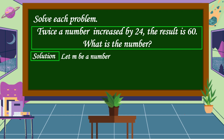We're going to use M as our number. Twice a number means 2M. Increased by means addition, 24. The result is 60, so it's equal to 60. Our equation is 2M plus 24 is equal to 60.